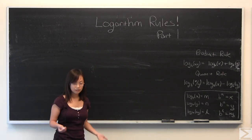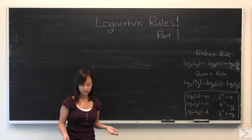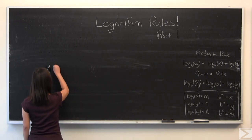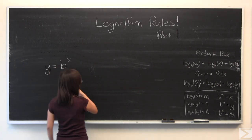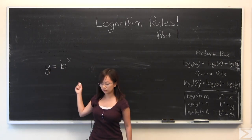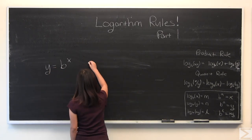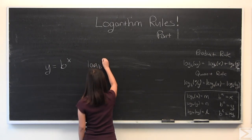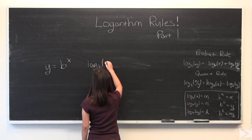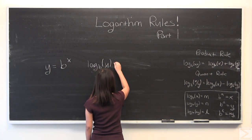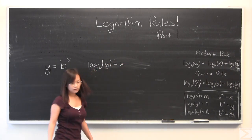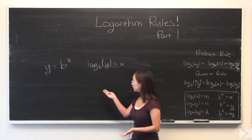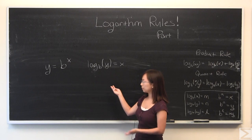I'm going to write down a very important property of log rules. If you're familiar with exponents, this statement over here, y equals b to the x, is equivalent in log form to log base b of y equals x. These two statements are equivalent. If you wanted to say one, that would imply the other.